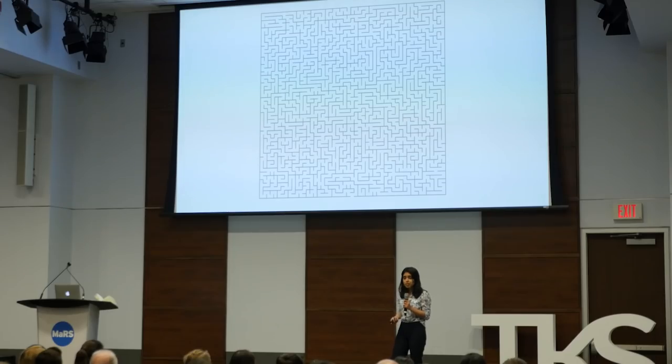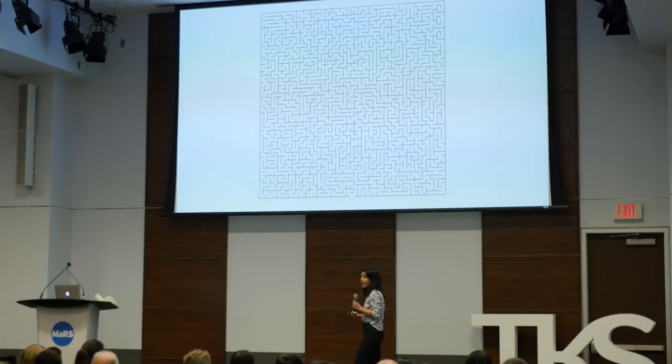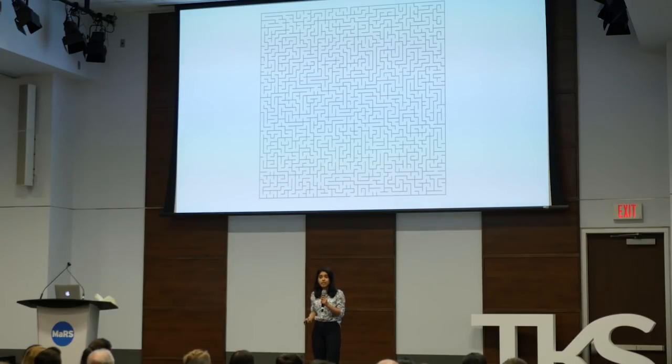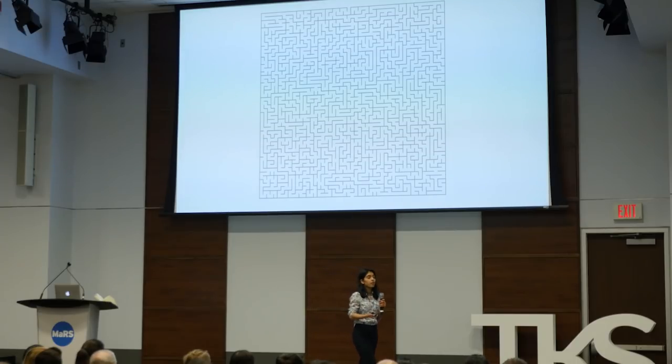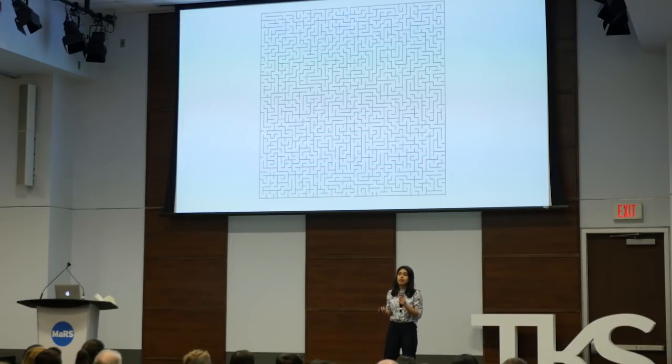An optimization problem is when you have to find the best solution out of a number of possibilities. When you increase the number of possibilities to an exponentially large number, it becomes really hard to find your way out of a maze like this. Classical computers just can't do that and break down — it can take the length of the universe to find a solution.